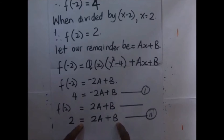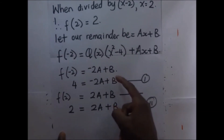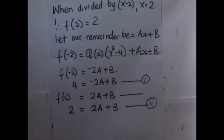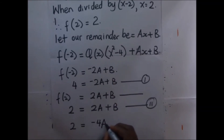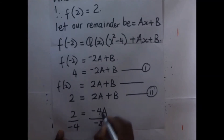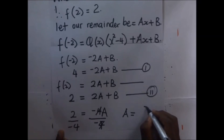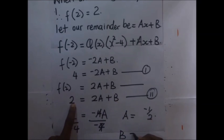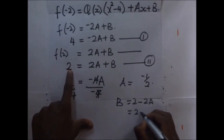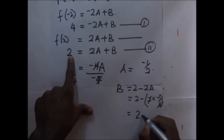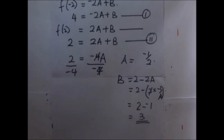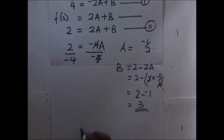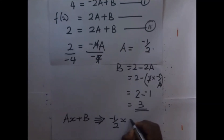To get the values of A and B we solve simultaneously. We eliminate B by subtracting: 4 minus 2 is 2, and negative 2A minus 2A gives negative 4A, so dividing by negative 4 gives A equals negative one half. Making B the subject in equation 2: B equals 2 minus 2A, giving B equals 3. So the remainder, AX plus B, is negative one half X plus 3.